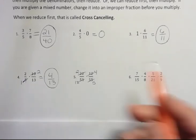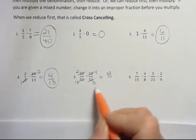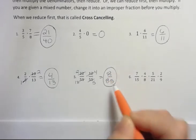And then you're going to multiply straight across. 2 times 4 is 8, and 17 times 5 would be 85. And that would be the final answer.